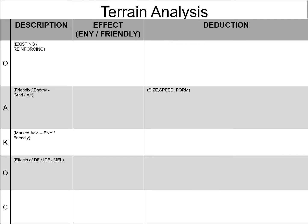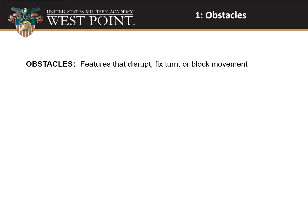We have a battle book that can help us lay this out with columns to write in our description of what terrain impacts the area, what effects it has on the enemy and friendly forces, and then deductions. Notice that the deduction part is the biggest one — that's what we need you to focus on. What does it matter?